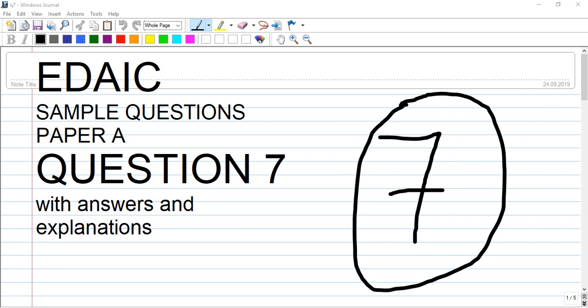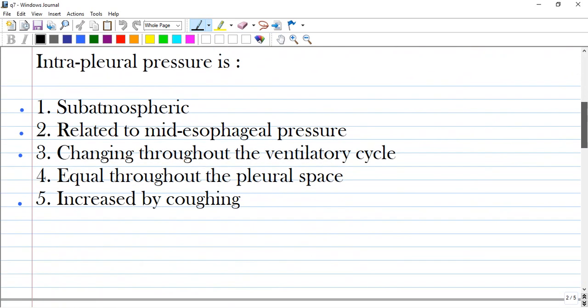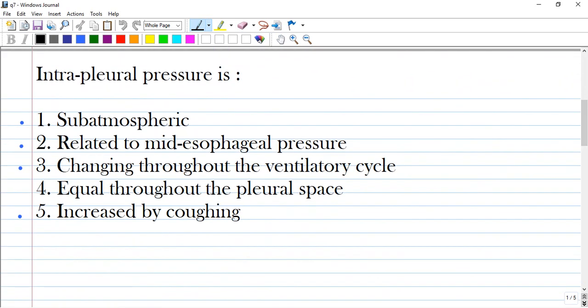Hi guys, it is sample question paper 8, question 7 from the EDIC website. Let's go with the question. Intrapleural pressure is: 1. Subatmospheric, 2. Related to mid-esophageal pressure, 3. Changing throughout the ventilatory cycle, 4. Equal throughout the pleural space, and 5. Increased by coughing.